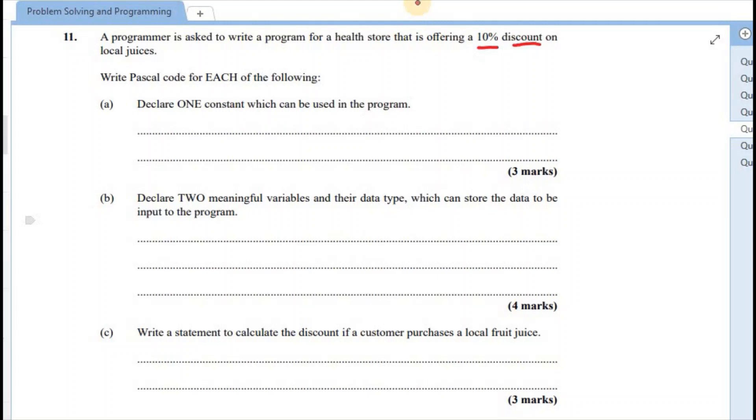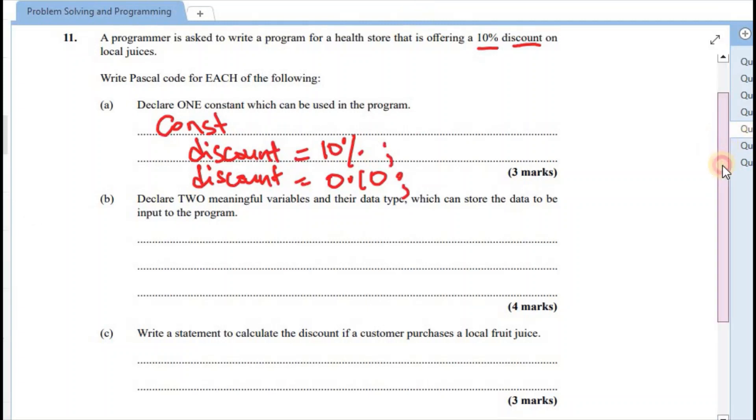So in Pascal, if we would have double-checked the notes, we start off with the const keyword. Followed by what's the constant that we want to declare. So in this case, the constant would be discount. And that is assigned the value of 10%. Or we could have written it as discount equals 0.10, followed by a semicolon to end that line.